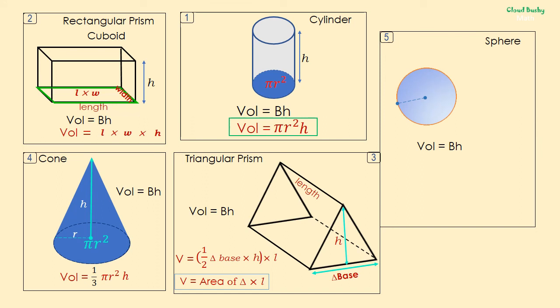For a sphere, the base is a circle. The base of a sphere is strangely in the middle of the sphere. To find volume, we need to multiply base area times height. We can replace the big B with πr² times height.